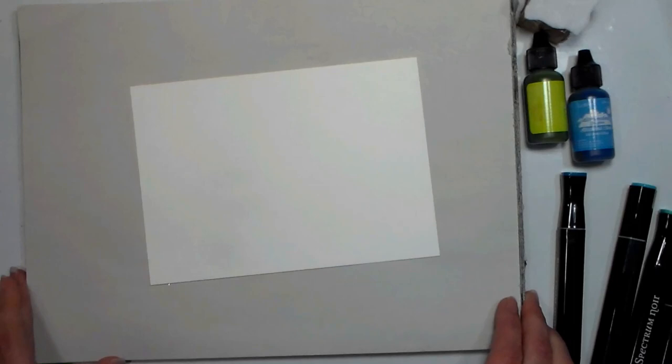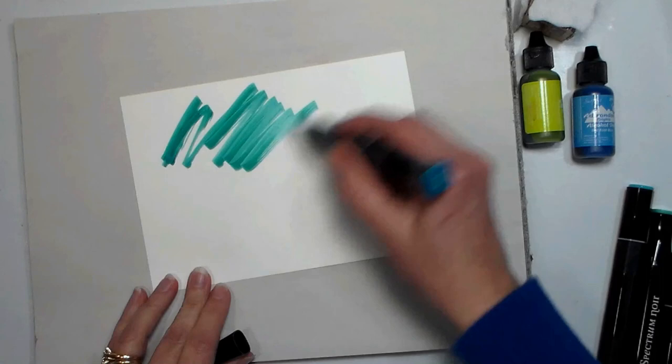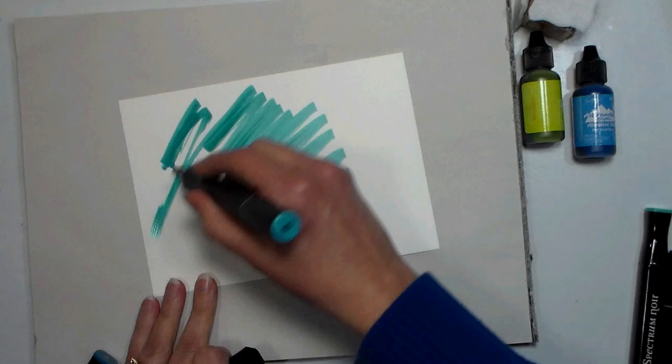I'm also using some alcohol pens. These are the Spectrum Noir markers that happen to be on a huge sale at Consumer Crafts right now. I just got the two new sets of 24 that I didn't have yet. Those are on sale for $24 a 24 pack, and the others are $20 a 24 pack, so make sure you check them out if you need some markers.